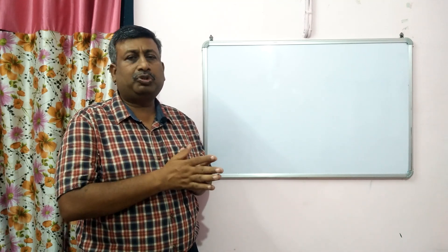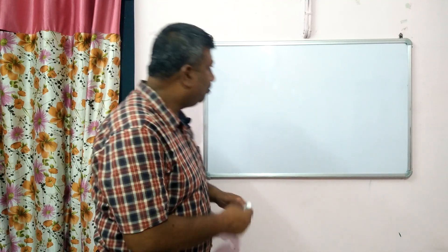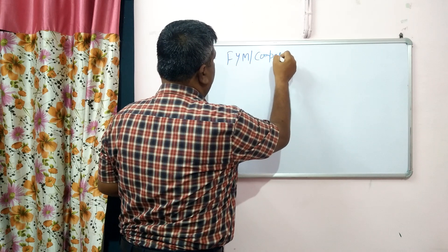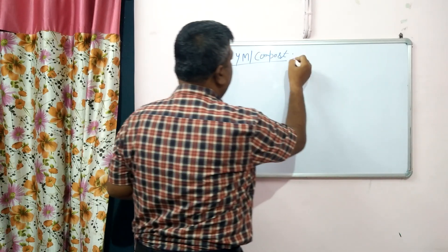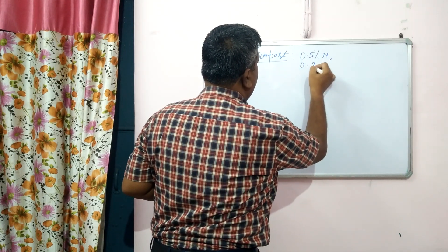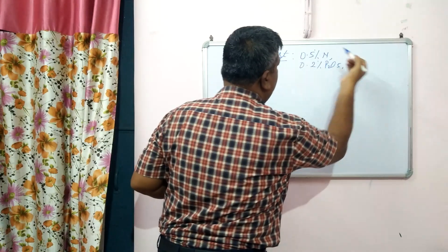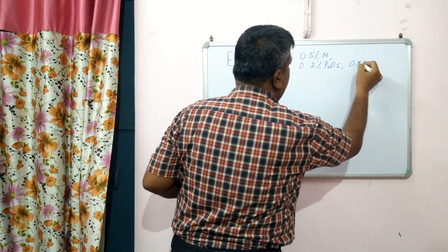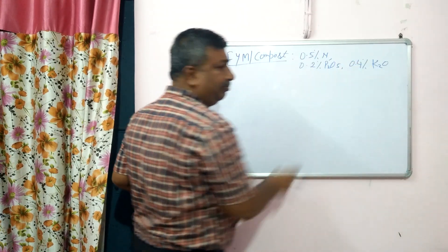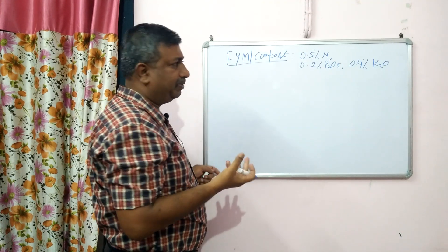When we apply FYM or compost, how much NPK is applied and how much is available to plants? In general, FYM or compost contains about 0.5% nitrogen, 0.2% phosphorus, and approximately 0.4% to 0.5% potassium. I am taking 0.4% potassium to make a difference from the others, though it may be approximately 0.5%.